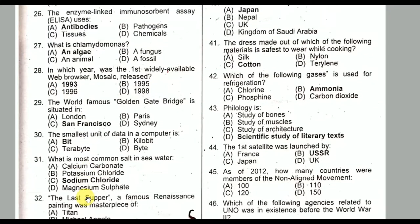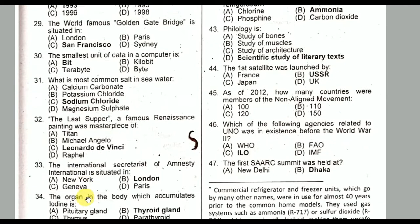Question number twenty-nine: The world-famous Golden Gate Bridge is situated in San Francisco. Option C is the correct option.